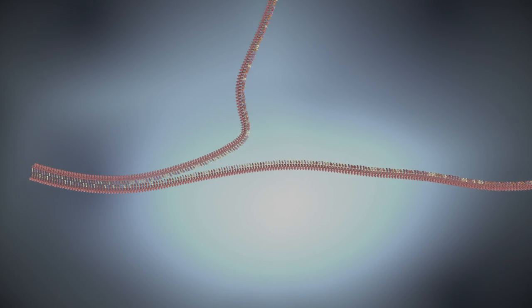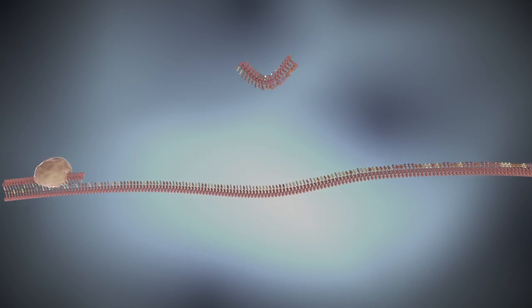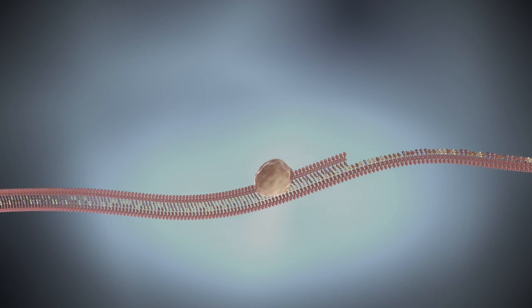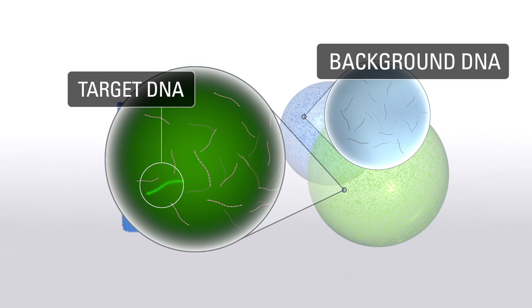PCR is performed on each individual droplet. If a droplet contains the target sequence, it will be amplified and a TaqMan reporter dye will emit a fluorescent signal. If the target sequence is not present in a droplet, no PCR will take place and only weak residual fluorescence is emitted.